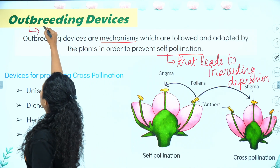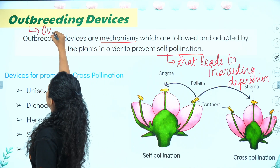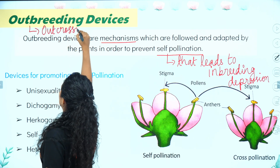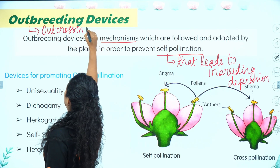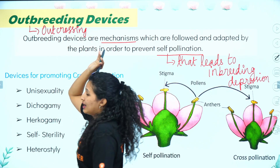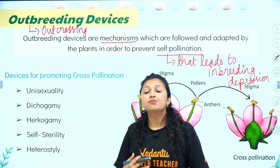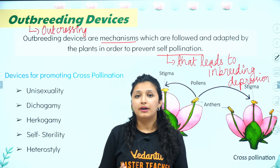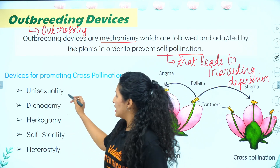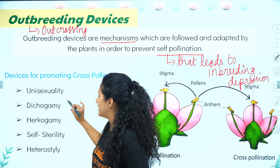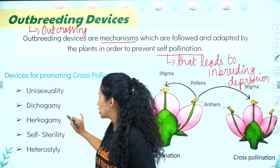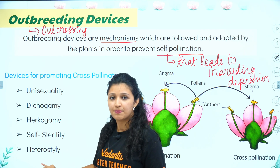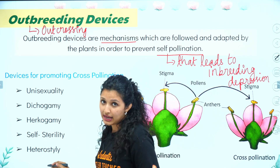Outbreeding or outcrossing — these are the cross-pollination helping devices. They are: Unisexuality, Dicogamy, Hercogamy, Self-sterility, and Heterostyly — all of these are the outbreeding devices we will be covering.